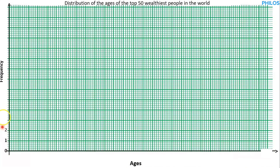For the y-axis, let's do it the same way as for the histogram: 0, 1, 2, 3, 4, 5, 6, 7, 8, 9, 10, 11. Remember our highest frequency is 11, so we must make sure we go up to 11. Now for the x-axis, in the case of frequency polygon, we are going to use the class midpoint.